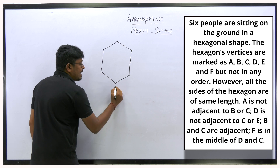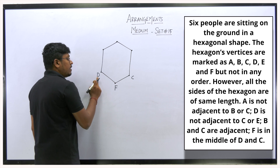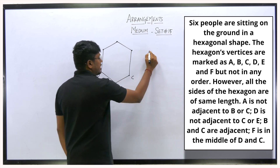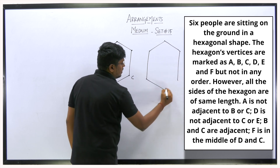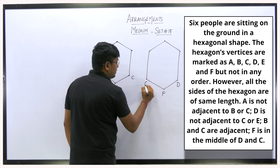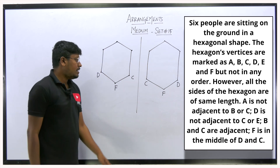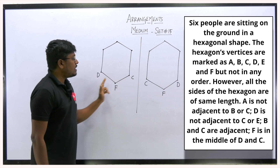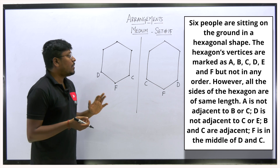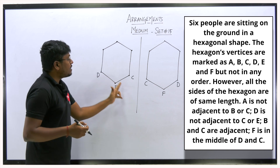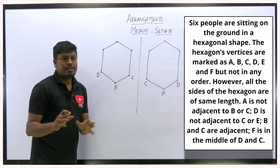Since F is in the middle of D and C, we can fix F between D and C in our diagram. There is another possible arrangement as well — F can be placed between D and C in the other orientation. Both diagrams are correct because they never said all persons are facing the center; they are just sitting at the vertices.